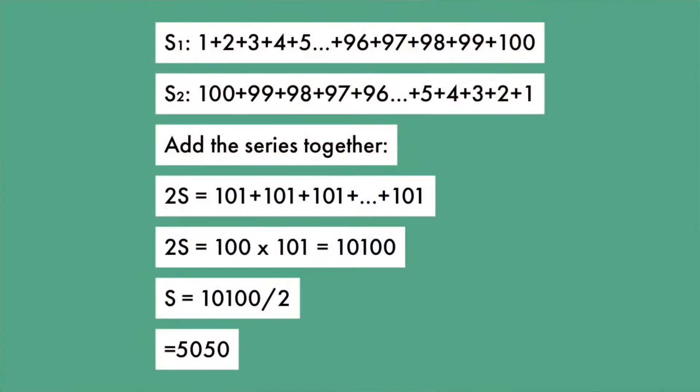Now the problem becomes simpler. 101 times 100 is relatively simple — just add two zeros to the end of 101 and you've got 10,100. So you would have the first series from 1 to 100, and the second series from 100 to 1. Adding the two series together gives 101 plus 101 plus 101, right up until the end. Then multiply 101 by 100 to get 10,100, and the last step is to divide 10,100 by two to get the final result of 5,050. So Gauss solved the sum of integers from 1 to 100 at the tender age of 7.